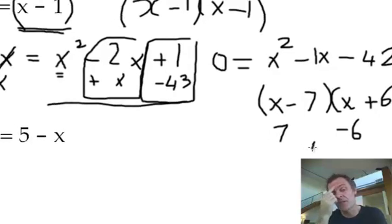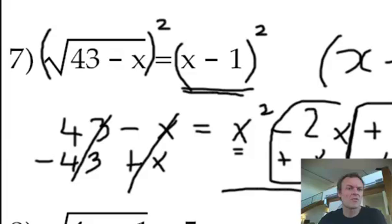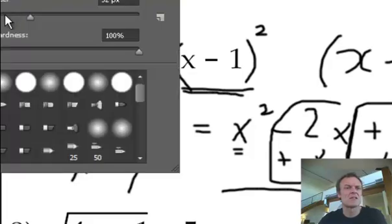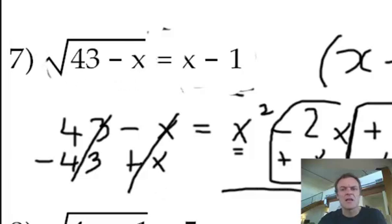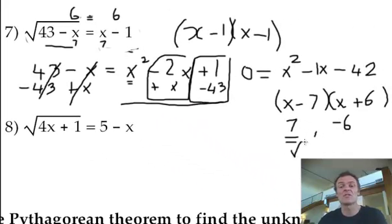But let's look at this. If I go back to the original question 7, here's the original question. Now if I plug a 7 into here, easy to do. The right-hand side, I've got 7 take away 1, it's 6. Now then, what's 43 take away 7? That's 36. What's the square root of 36? That's 6. So in other words, that's fine. That worked. I checked.